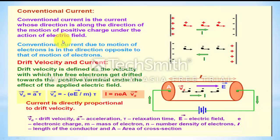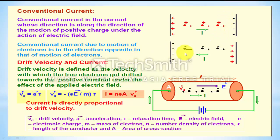The concept of conventional current was discussed in our previous video. In the conventional method, current is supposed to be the flow of positive charge from higher potential to lower potential. But in the modern concept, it is the flow of electrons or free electrons from the negative terminal to the positive terminal.